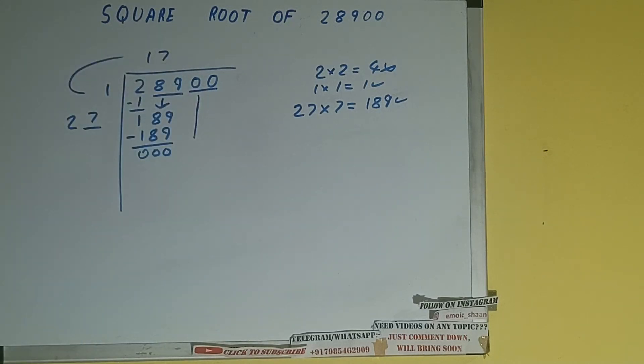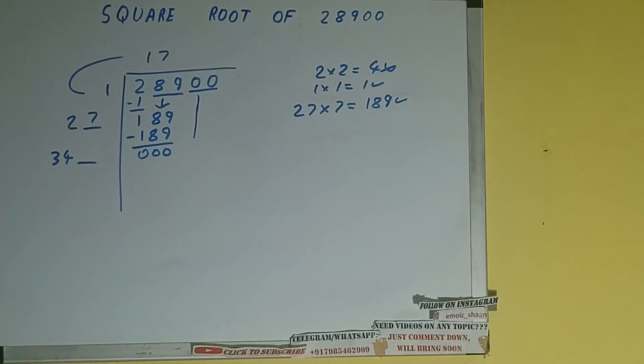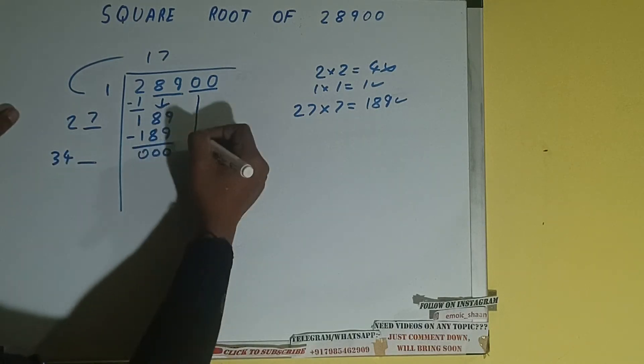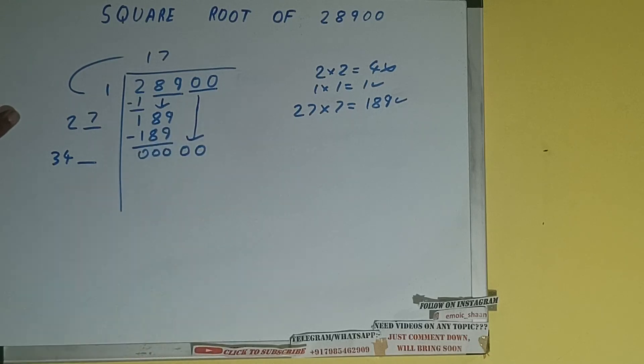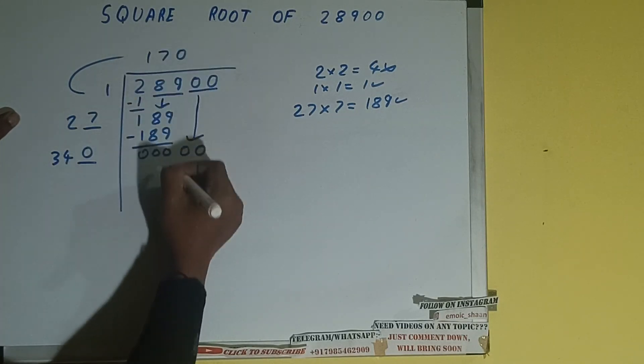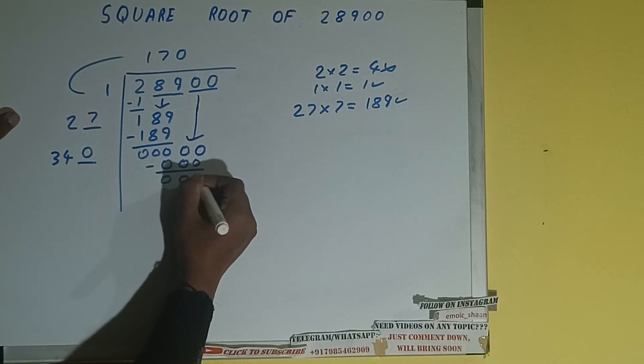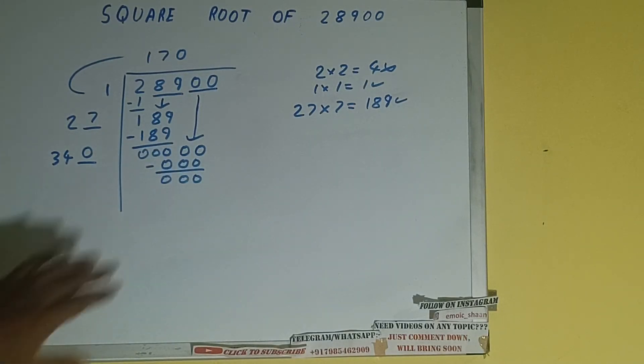Now we'll bring the pair of 0 down and we'll divide it once. So for that simply we need to write 0 here and 0 here. We'll get 0 subtract 0, and 0 will be left. Now because we have finally got 0 after dividing the pair of 0 which was part of the number, the answer will be in the quotient.